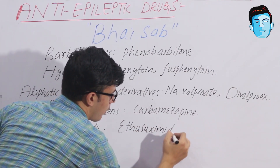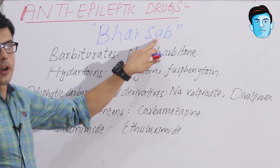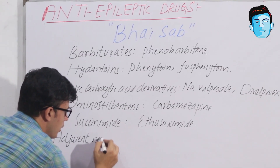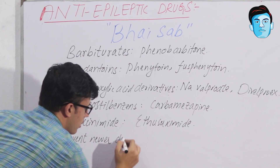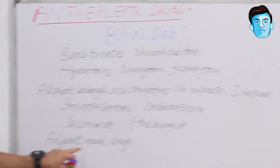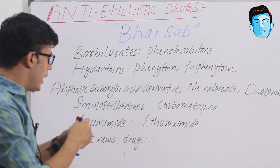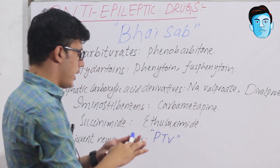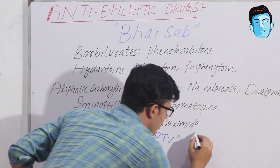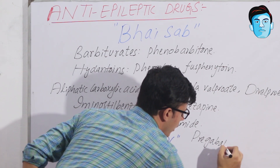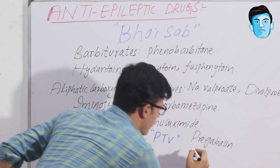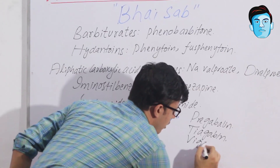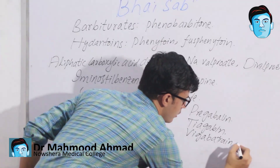The next A stands for adjuvant newer anti-epileptic drugs. This class contains a lot of drugs, but for some key drugs we have a trick: PTV. P stands for pregabalin, T stands for tiagabine, and V stands for vigabatrin, etc.